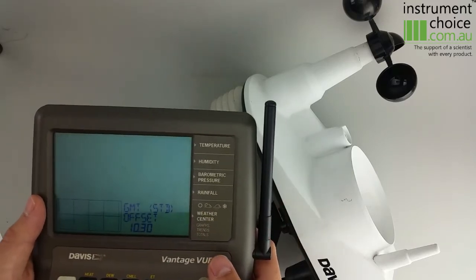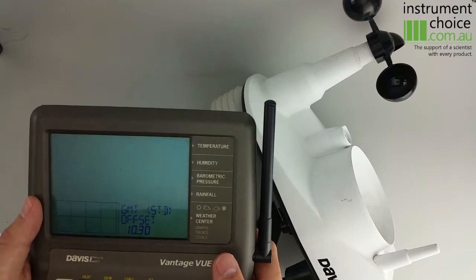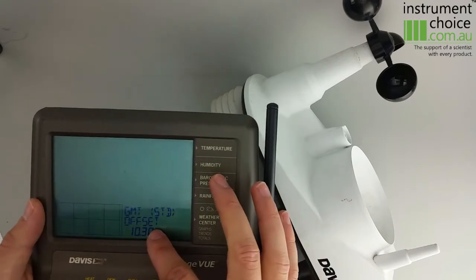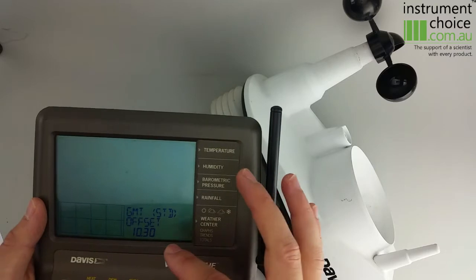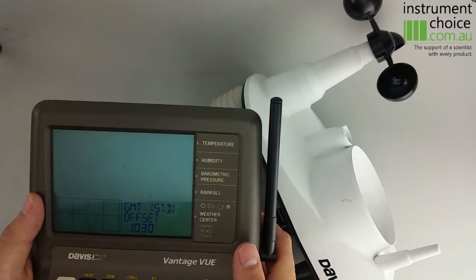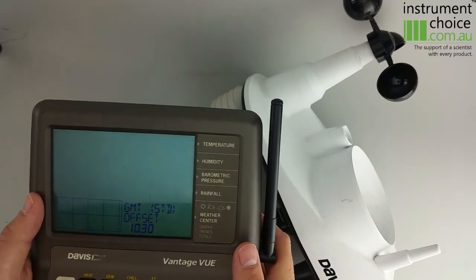Our next step is to set up our GMT offset. We're based in Adelaide, so ours will be 10.5. So that's 10.5 hours off Greenwich Mean Time.